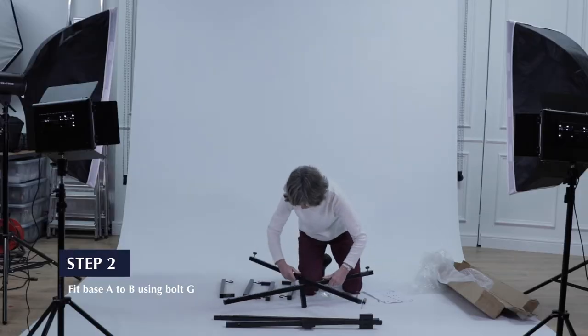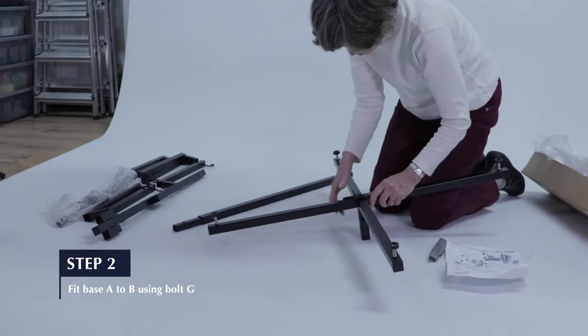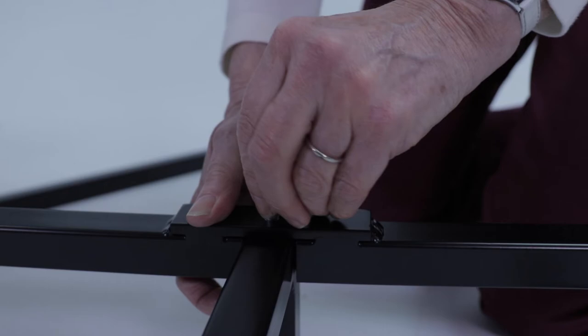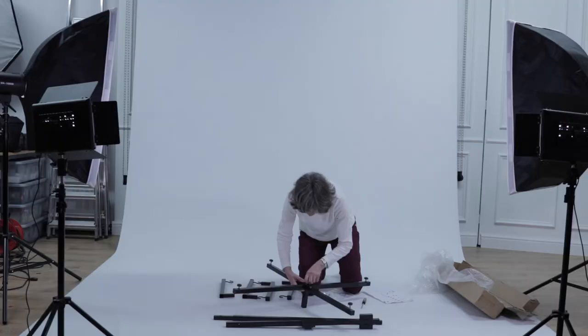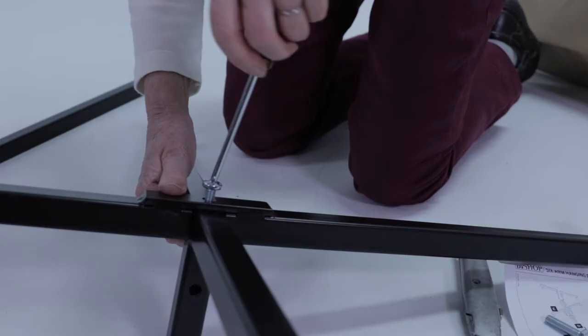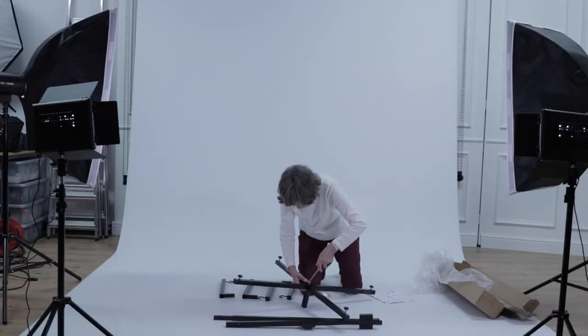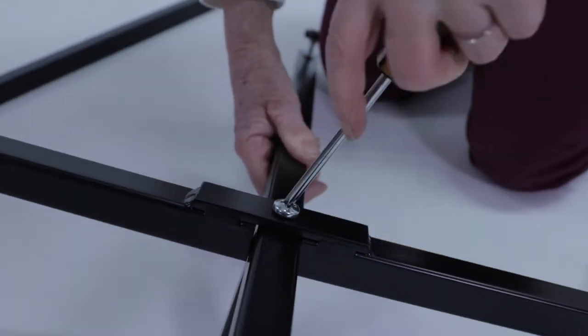Step 2. Fit the female base A to the underside of male base B using pan head bolt G. You'll need a Phillips or flat blade screwdriver to fit the bolt, and ensure that it's tightened well so that the base is completely rigid.